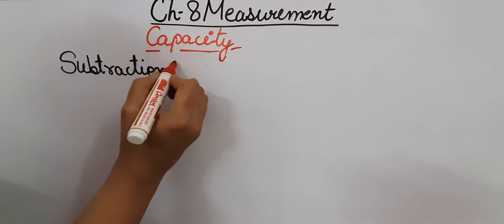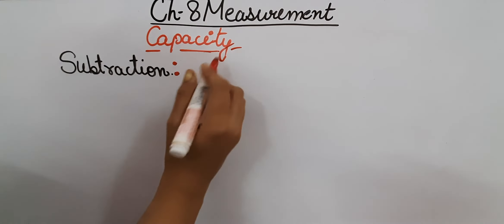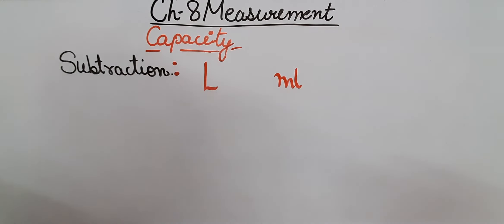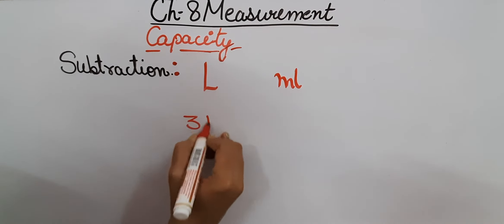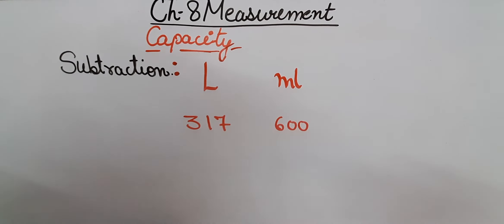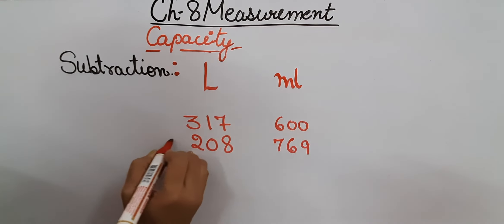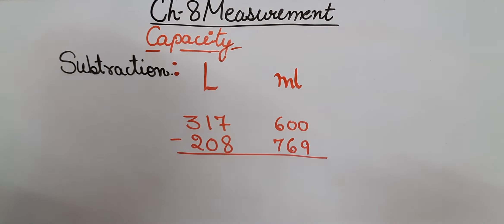Let's take one example of subtraction. First of all we will make the sections of liter and milliliter. That will be easier for us to calculate. Then we will take 317 liters 600 milliliters minus 208 liters 769 milliliters. We will do subtraction as we do generally.